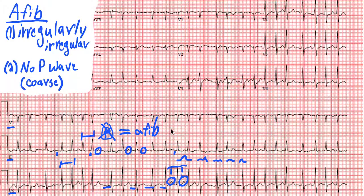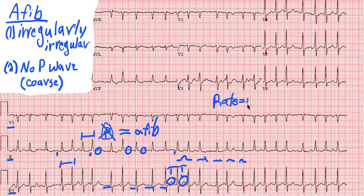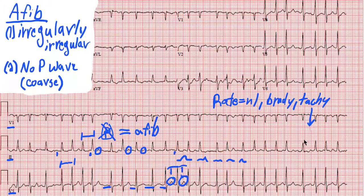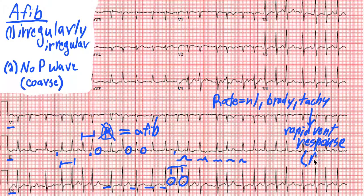The rate on this patient is something to note, and we can talk more about it in a future episode. When we talk about atrial fibrillation, you can actually have a rate that is normal — so they're rate controlled. You can also have bradycardia with slow atrial fibrillation, or tachycardia. The tachycardia we call atrial fibrillation with a rapid ventricular response, abbreviated RVR.